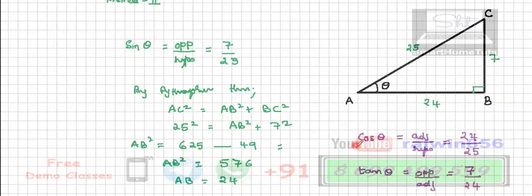So this is the second method by which we can find the other trigonometric values like cos theta and tan theta. Just take down this second method and then we will do the other sums.